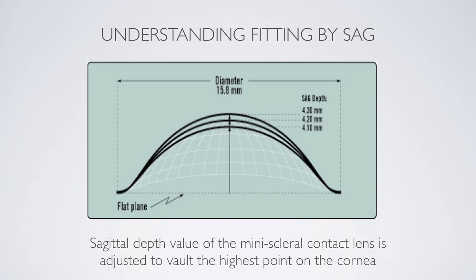So what exactly is sag? If I took an MSD lens and placed it on a tabletop and measured from the table surface to the highest point inside that lens, that is the sagittal depth of that contact lens. The depth of that contact lens is adjusted so that it is going to vault over the cornea on which it's placed.